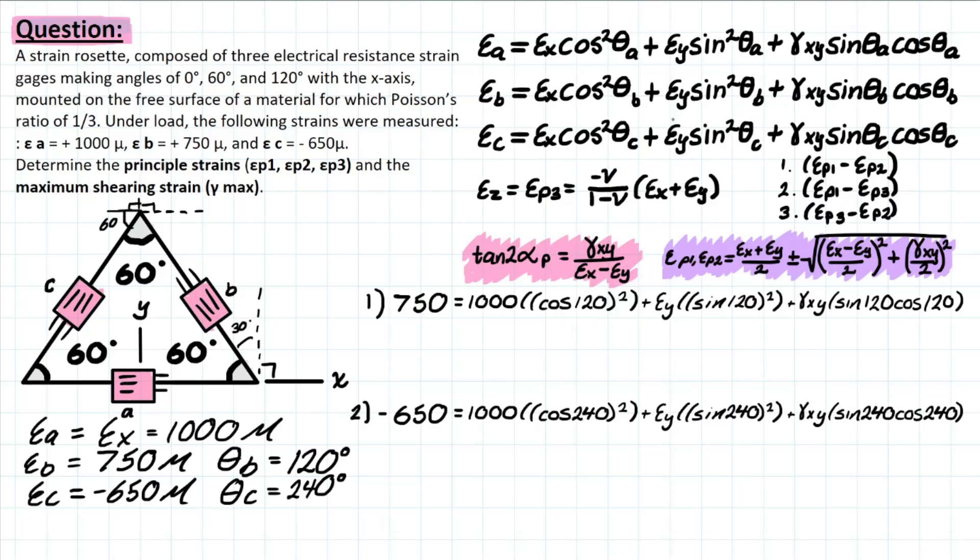We need to solve for two unknown variables, which are epsilon_y and the shearing strain xy. The only way to do this would be to set up a system of equations so that you can solve for one variable and then plug in for the next. That's what's going on here. We've just plugged in our variables that we already know.